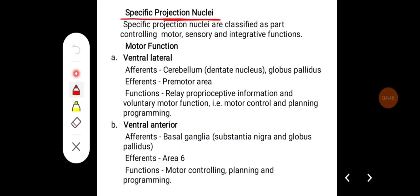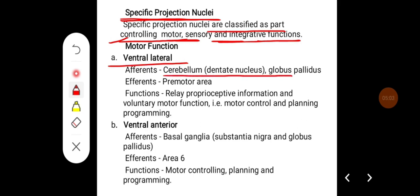Specific projection nuclei are classified under motor, sensory, and integrative functions. For motor function, the ventral lateral nucleus receives afferents from the cerebellum, especially the dentate nucleus, and from the globus pallidus. Efferents go to the pre-motor area. Their important function is to relay proprioceptive information and support voluntary motor function, including motor control, planning, and programming.